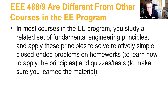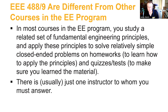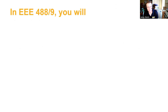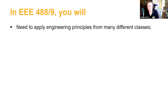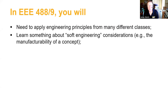The real world is quite a bit more complicated than the simple engineering principles that we teach you in most courses. In most courses, there's usually just one instructor to whom you must answer. Capstone is different in that you're going to have to answer to multiple stakeholders, and also to your peers, your teammates. In EEE 488 and 489, you're going to need to apply engineering principles from many different classes, so you may want to form teams with students that have different coursework experience. You're going to need to learn something about soft engineering considerations — a good example is the manufacturability of a concept. You can have a paper design that works wonderfully, but if you can't produce it, it has very little value.